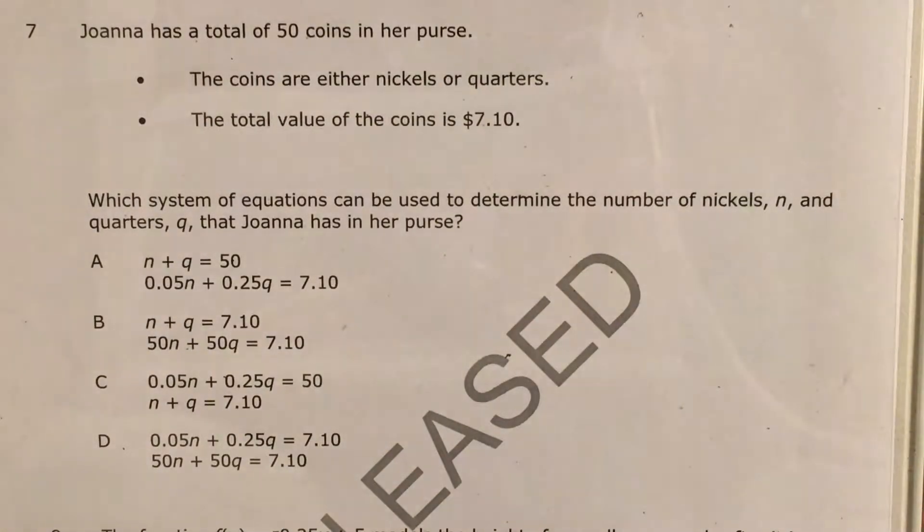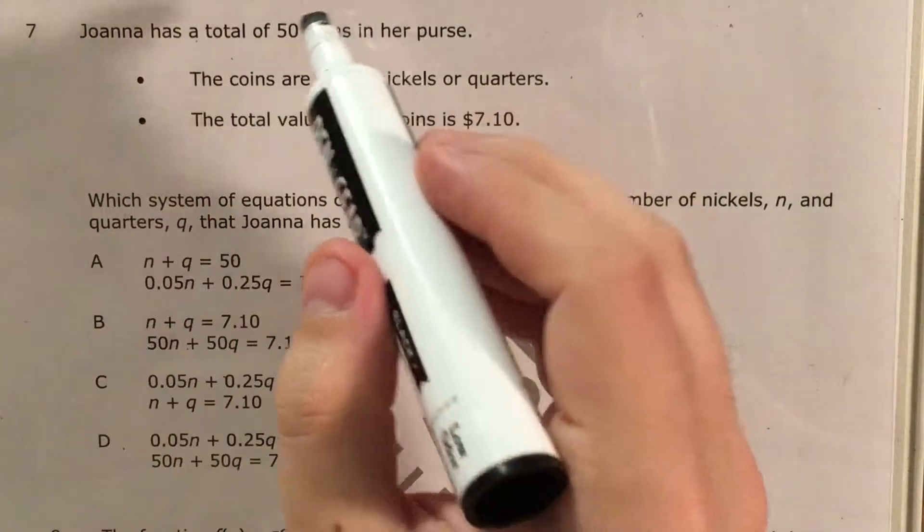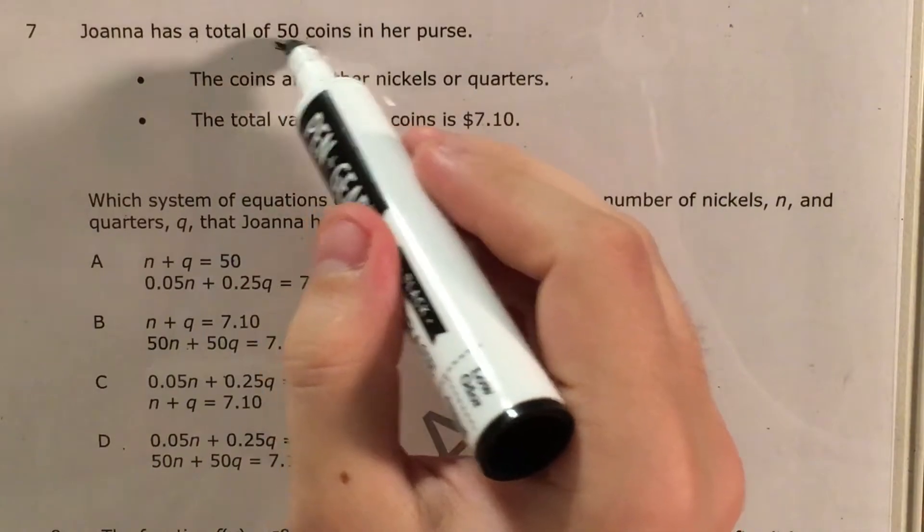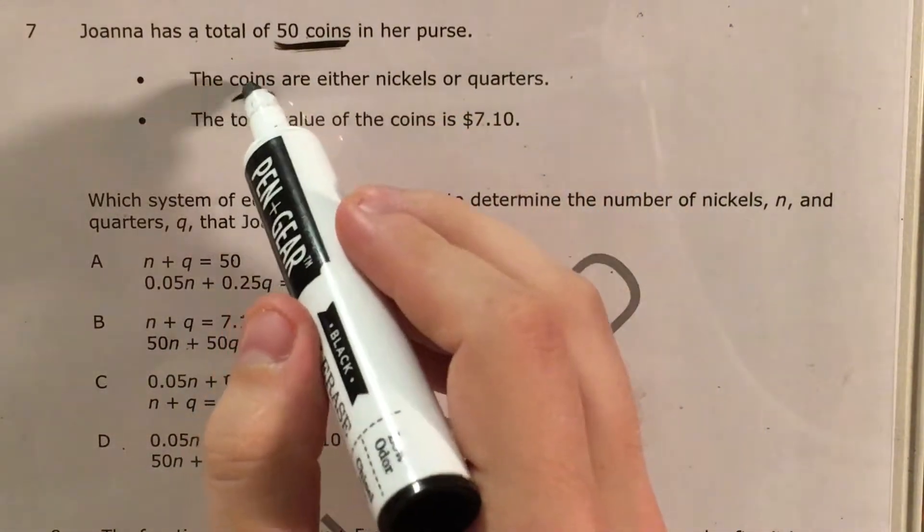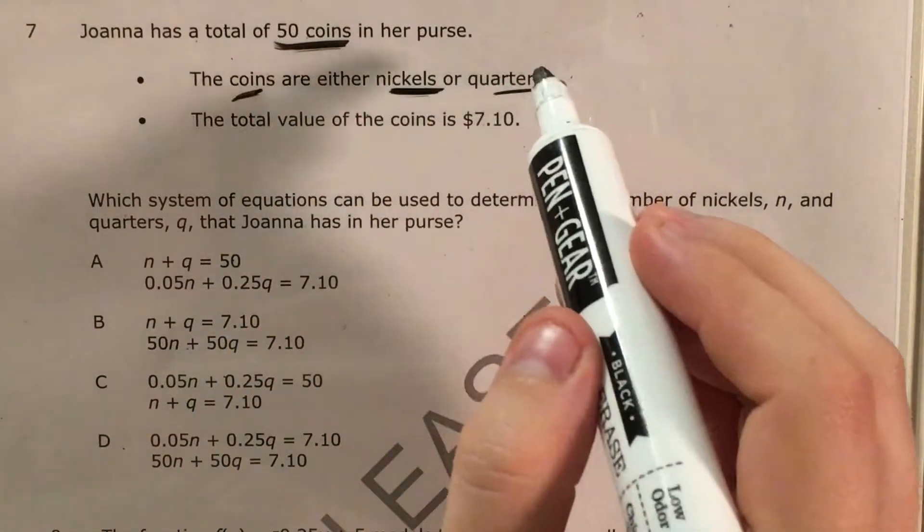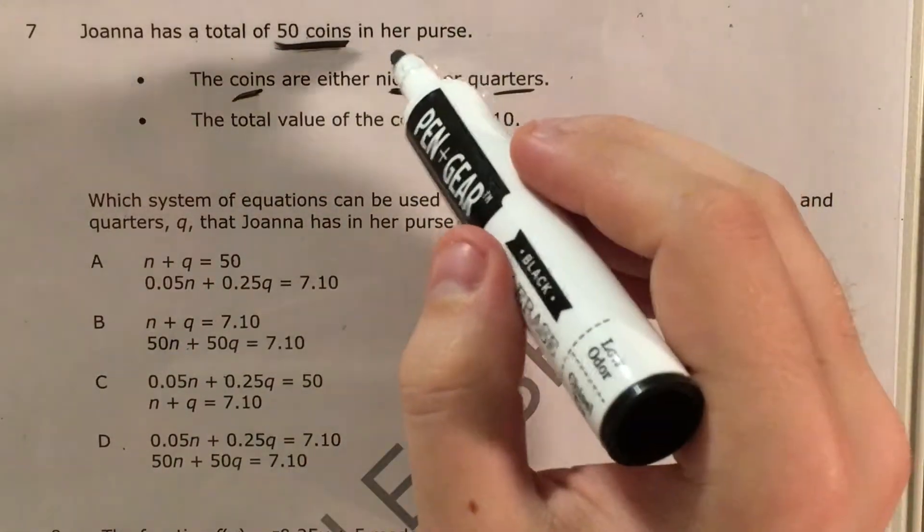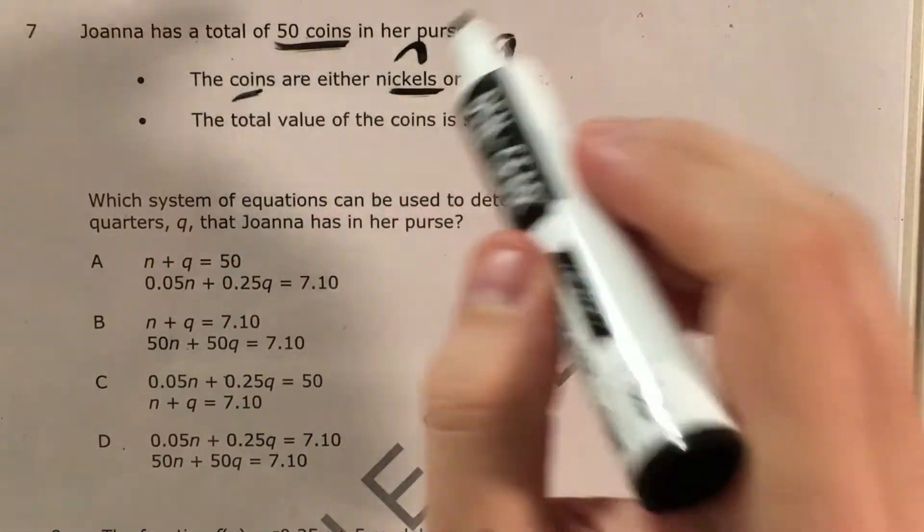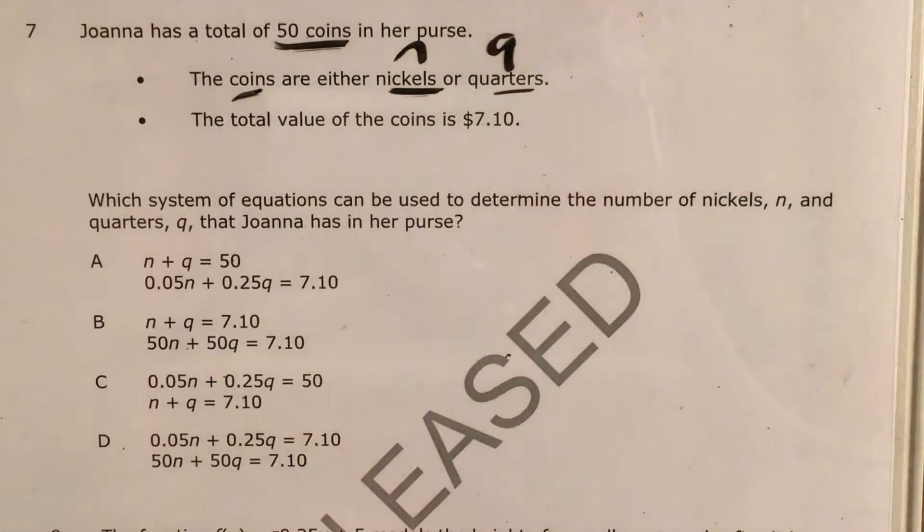So let's get started by closely reading this and seeing what words we can pick out. So let's start with Joanna has a total of 50 coins in her purse, so 50 coins, and then it does say the coins are either nickels or quarters, and all of our answer choices say that this is N and Q. Nickels is N, quarters is Q. That was probably pretty obvious.